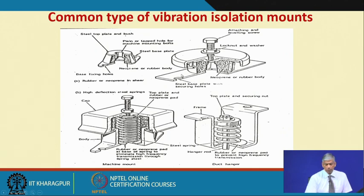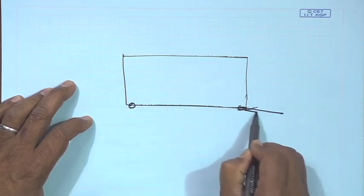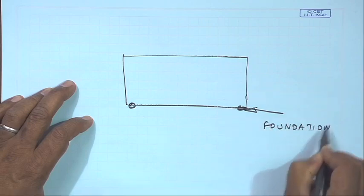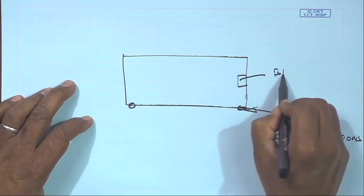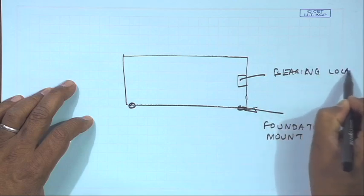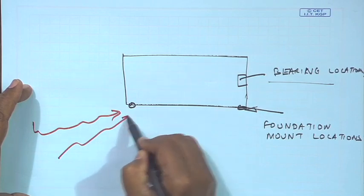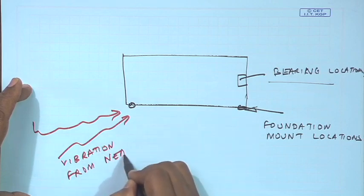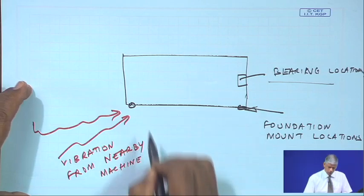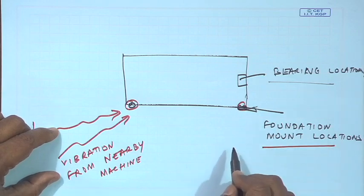For common types of vibration isolation mounts, when doing condition monitoring of machines, transducers used for measurement will often be at the foundation and mount locations or the bearing locations. Vibration from a nearby machine will always influence your measurements at a particular location. So one has to be very careful to understand whether the machine has proper foundation conditions and what are the limits of the isolators.